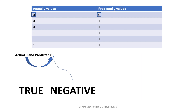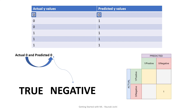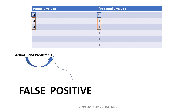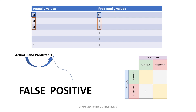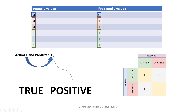Now let's fill in our confusion matrix. The first value is true negative, so I'll enter 1 in the true negative section. After that, I have two false positives, so I'll put 2 in the false positive section — because actual is 0 and predicted is 1. Then we have true positives, where both are 1. And since we don't have any false negatives, we put 0 there. This is how our confusion matrix is done.